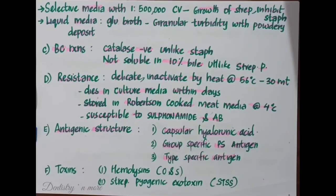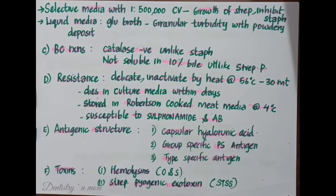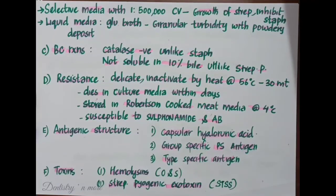The outer part of the cell wall contains protein antigens. Streptococcus pyogenes produces toxins including hemolysins and Streptococcal pyogenic exotoxins (SPE). Streptolysin O is oxygen-labile, heat-labile, lyses red cells, and is cytotoxic for neutrophils, platelets, and cardiac tissues. It is antigenic, and anti-streptolysin O (ASO) regularly appears in sera following Streptococcal infection. ASO titers above 200 units suggest either recent or recurrent Streptococcal infection.